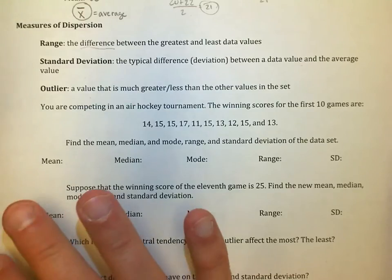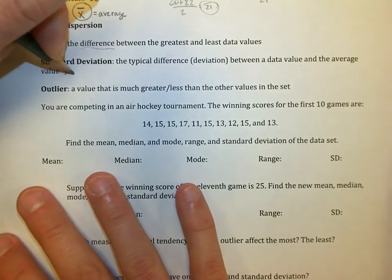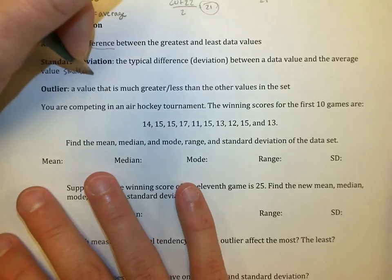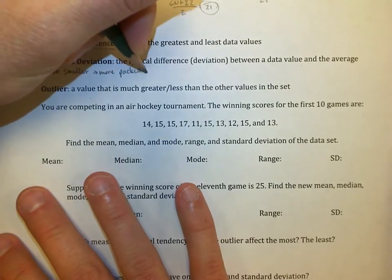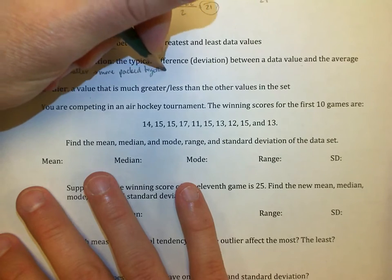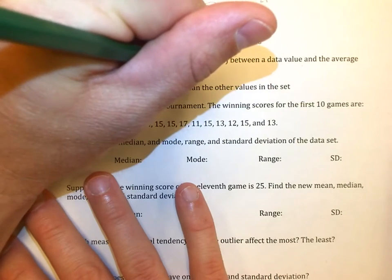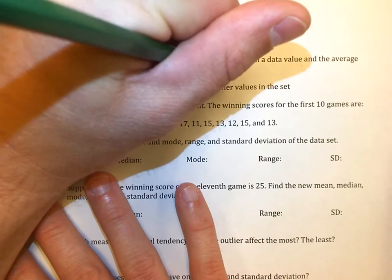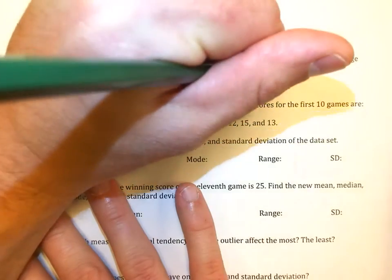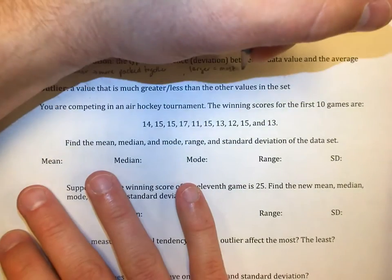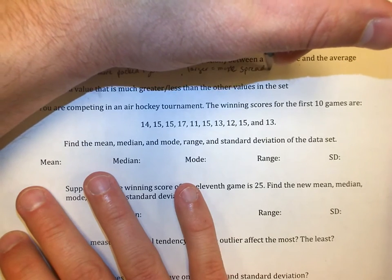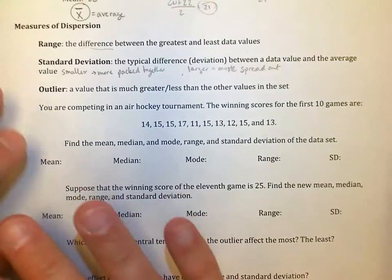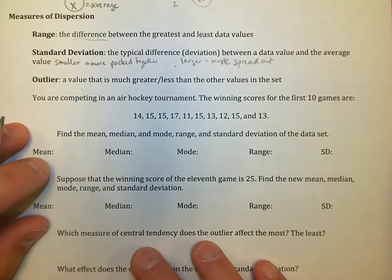And so basically what we know is that a smaller number means that the numbers are more packed together right around the mean. And a larger value means that they're more spread out. So there's a very short definition of what standard deviation actually pertains to. The more spread out the values are, the higher the standard deviation.